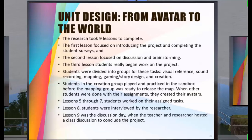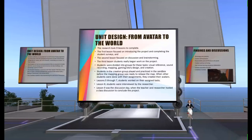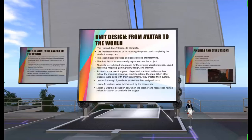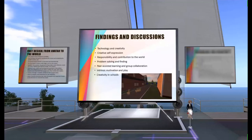The research took 9 lessons to complete. The first lesson introduced the project and completed the student survey; the second lesson focused on discussion and brainstorming. It was not until the third lesson that students began working on the project. Students were divided into groups by task: visual reference, sound recording, mapping, game and story design, and creation. Students in the creation group played and practiced in the sandbox before the mapping group was ready to release the map. During lessons 5 through 7, students worked on their assigned tasks. During lesson 8, students were interviewed by the researcher. Lesson 9 was the discussion day where the teacher and researcher hosted a class discussion to conclude the project.